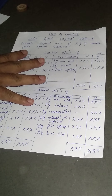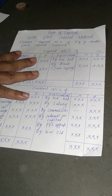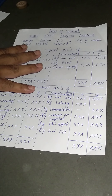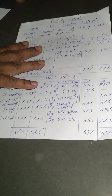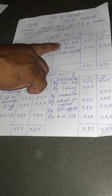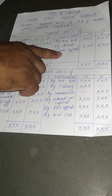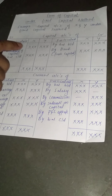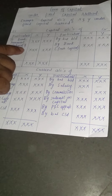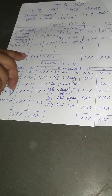Whatever balance remains is the partner's capital for the year. In this format, we have not taken any adjustments for interest on capital, salary, or profit or loss from the P&L appropriation account. We only consider the opening capital, any additional capital brought in, and any permanent withdrawal of capital. All other adjustments are made in a separate account called the Current Account.